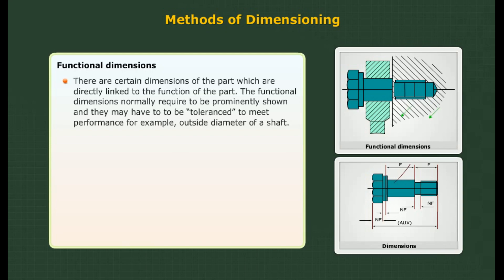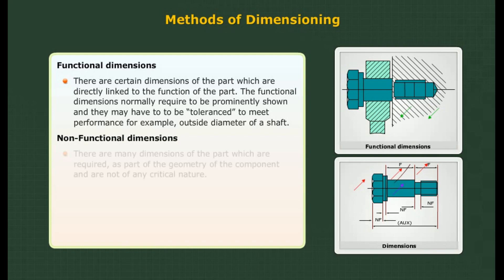Functional dimensions: These are dimensions of the part directly linked to its function. For example, the outside diameter of a shaft — the torque transmitted is directly linked to this. Functional dimensions normally require prominent display and may need to be toleranced to meet performance requirements. Non-functional dimensions: These are many dimensions required as part of the geometry of the component and are not of critical nature.